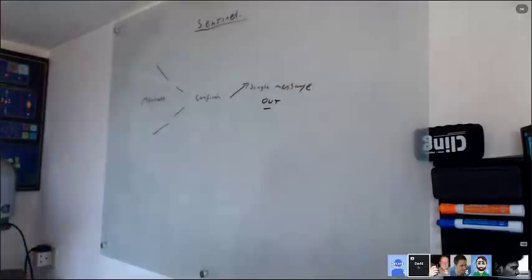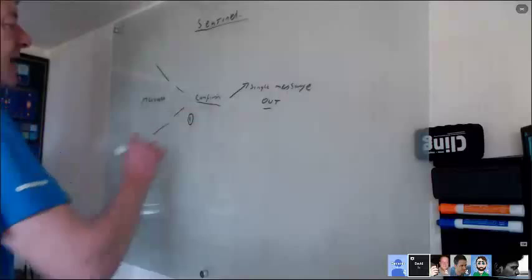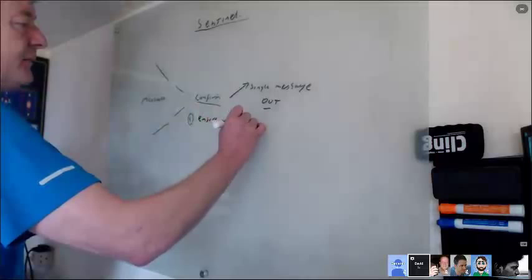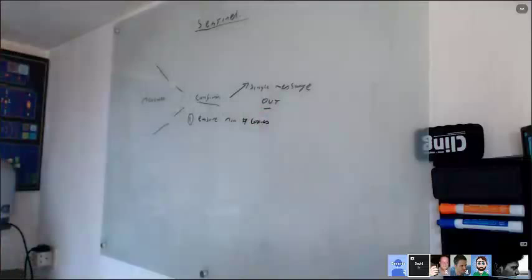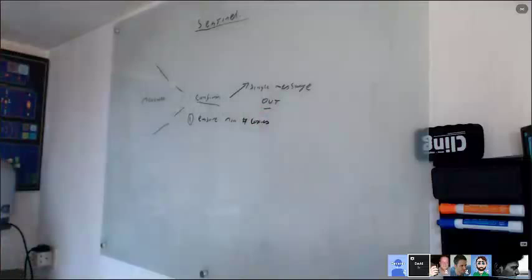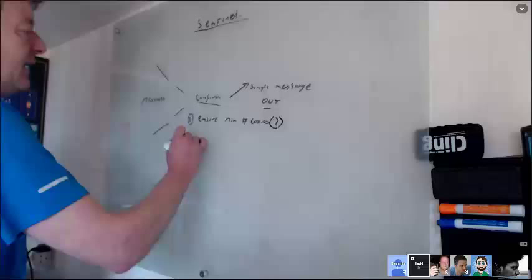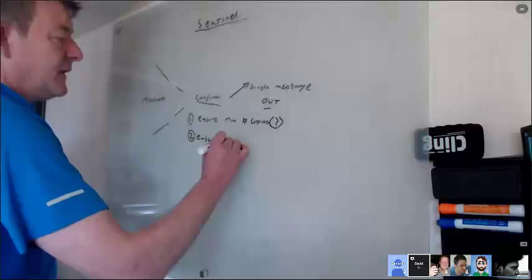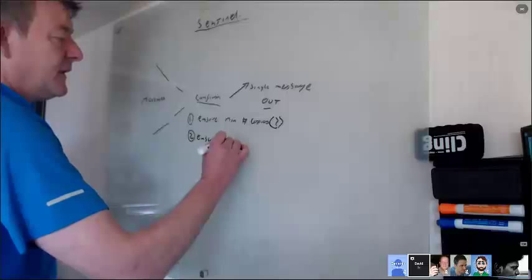So really it's doing a couple of jobs here. This confirmation is doing a couple of jobs. So one task it's doing is ensure the minimum number of copies of a message are received. We'll go into what that means in a minute. The second thing it needs to do is ensure that each message is valid.